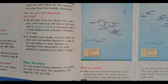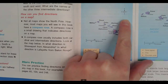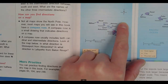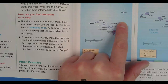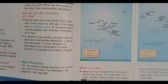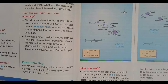How can you find directions on a map? Not all maps show the North Pole. However, most maps you will see in this book have a compass rose. This is the compass rose right here. A compass rose is a small drawing that indicates the directions on a map. A compass rose usually includes both cardinal directions and intermediate directions.